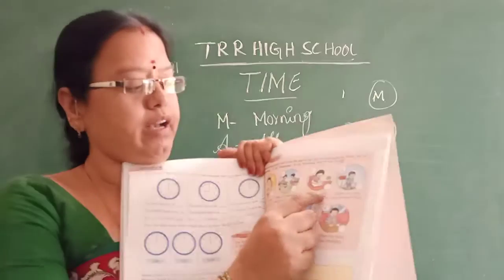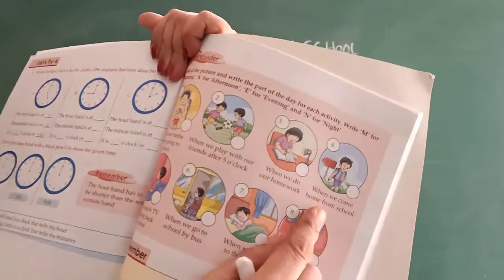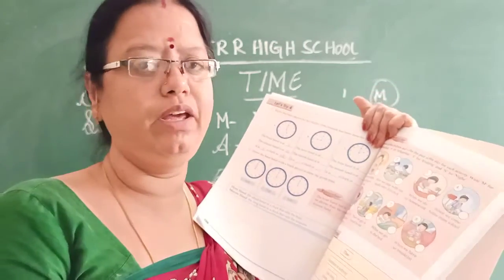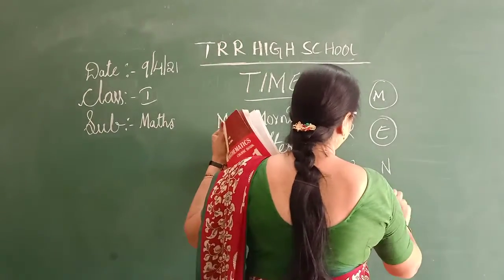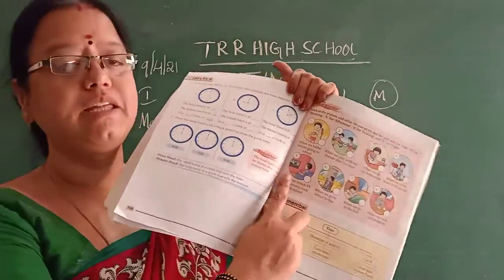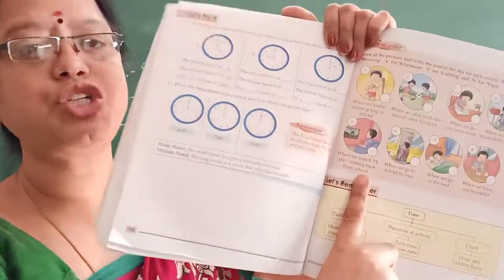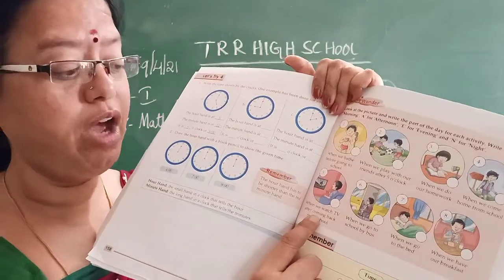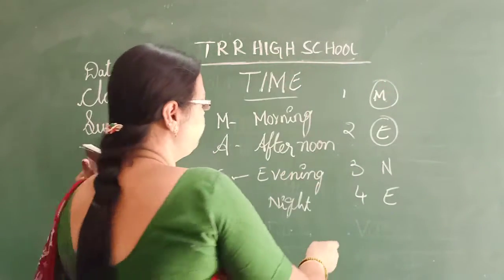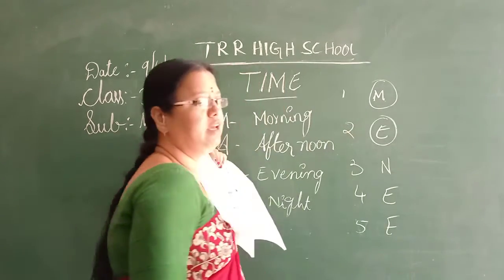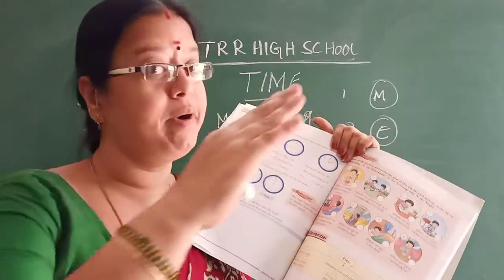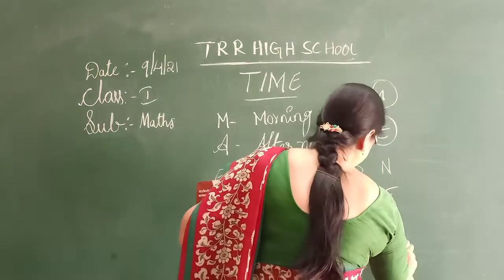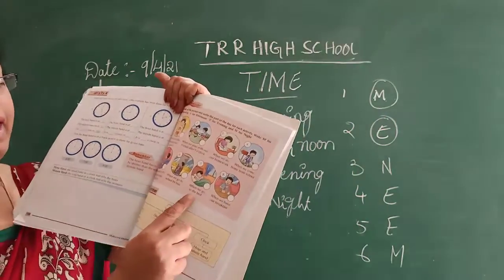In the fourth picture, when we come home from school — that is evening, so write E. In the fifth picture, when we watch TV after coming back from school — that is also evening, so write E. When we go to school by bus — that is morning, so write M for morning.